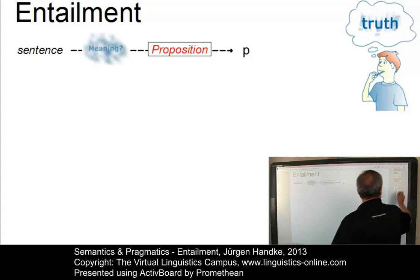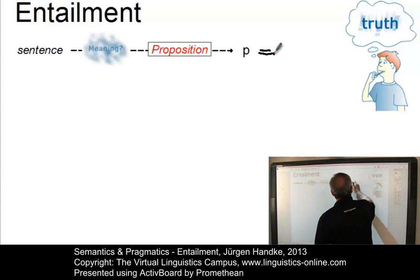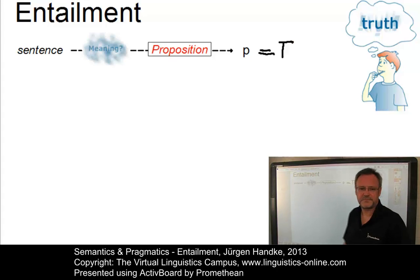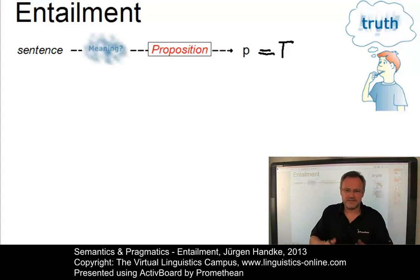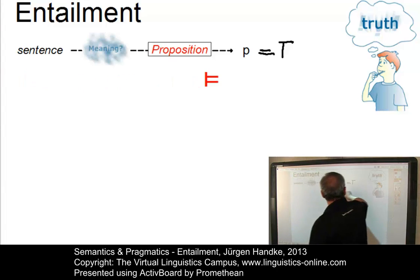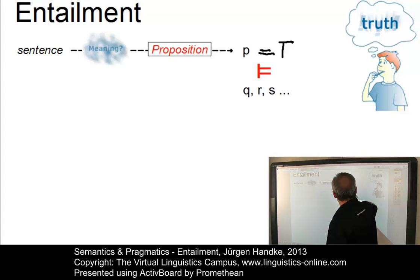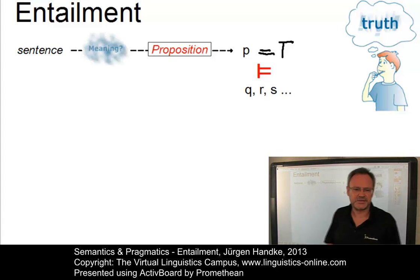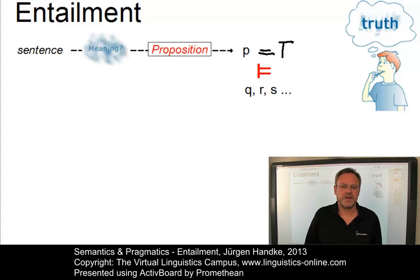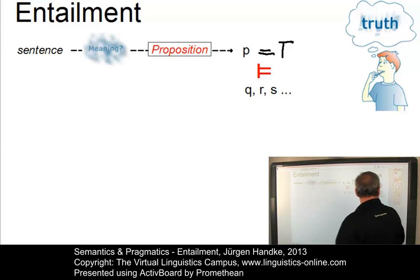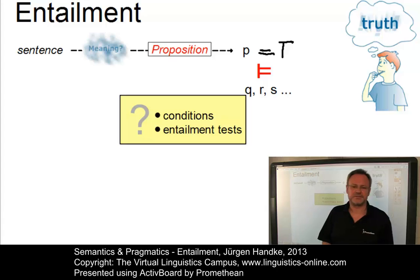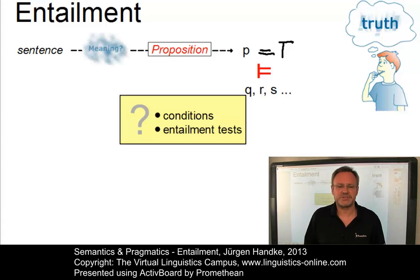Formally, entailment is defined as any true inference from a true proposition. So if P is true, it may entail — and this here is the logical symbol, the propositional symbol for entailment — any other proposition Q, R, S, and so on. However, for a proposition to entail any other proposition, a set of conditions has to be satisfied, and these entailments can be tested.